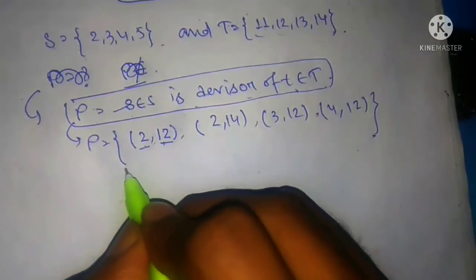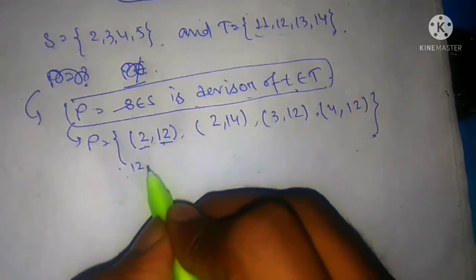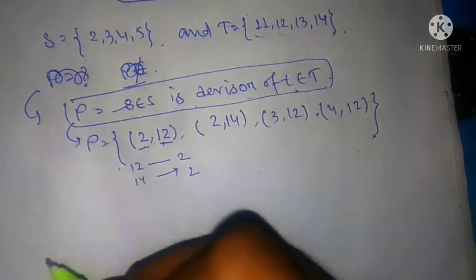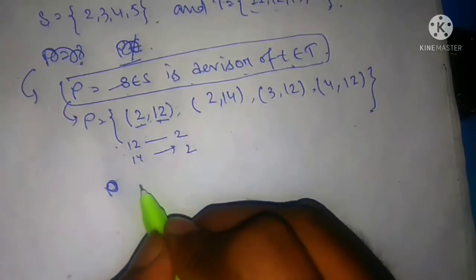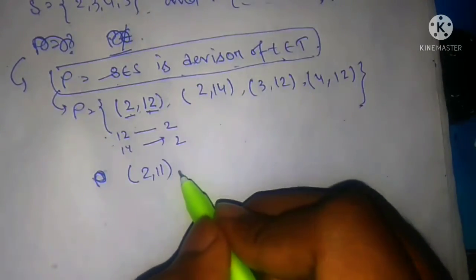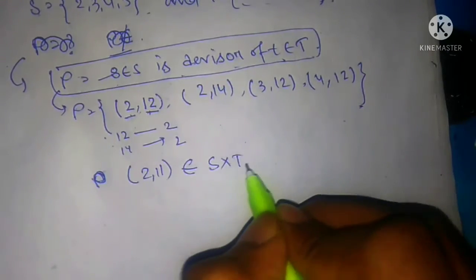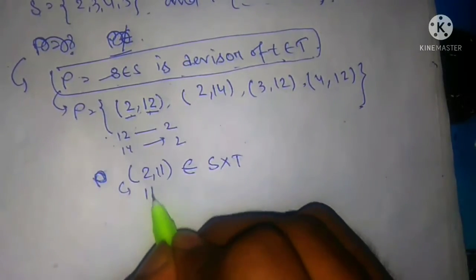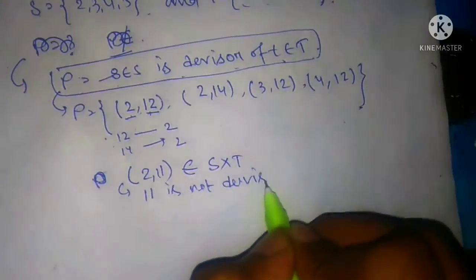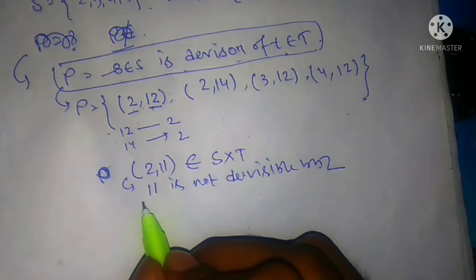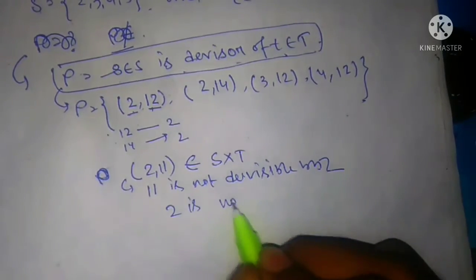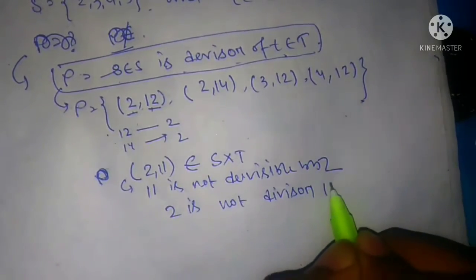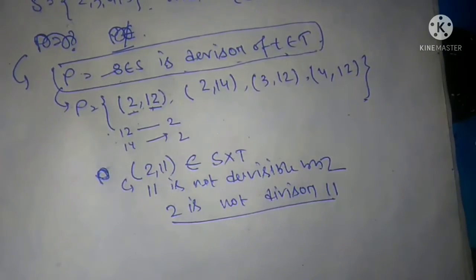The relation is 's is a divisor of t'. So only pairs where the S-element divides the T-element are included. For example, 12 is divisible by 2 and 14 is divisible by 2. However, (2, 11) is not in Rho because 11 is not divisible by 2 — 2 is not a divisor of 11, so this pair does not belong to relation Rho.